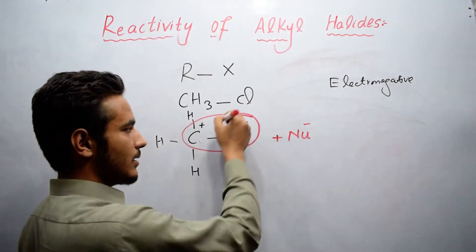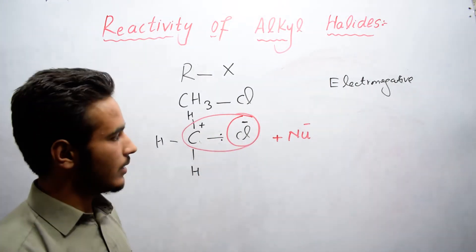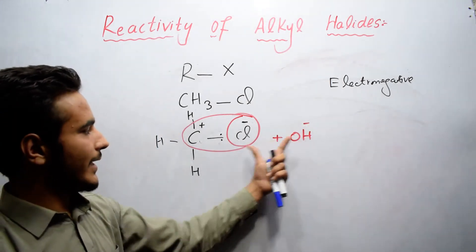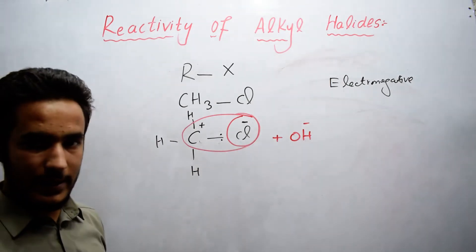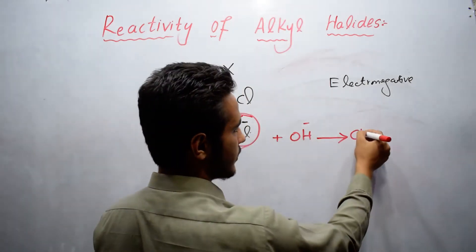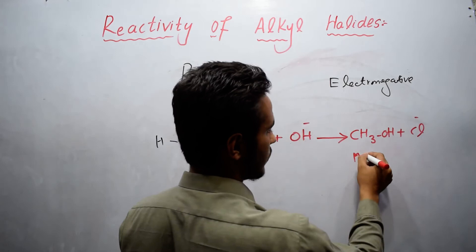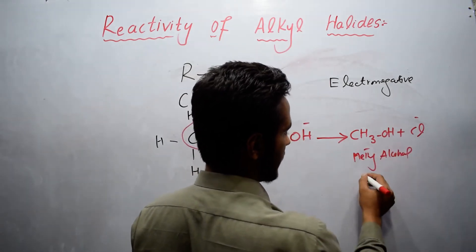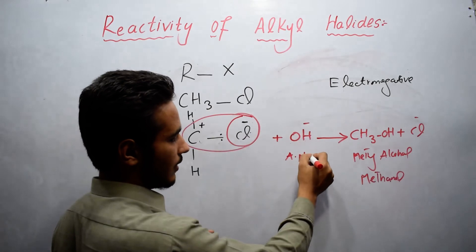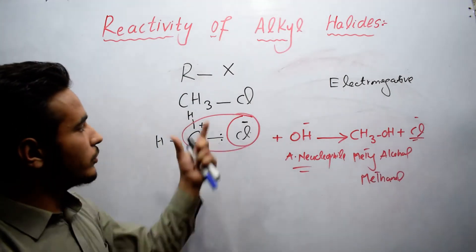A nucleophile is basically a negative species that loves positive charge. Chlorine is also a nucleophile because it carries a negative charge. When a stronger nucleophile like OH⁻ attacks methyl chloride, it replaces the chlorine. So CH₃Cl + OH⁻ gives CH₃OH plus Cl⁻, which is methyl alcohol, also known as methanol. Here OH is the attacking nucleophile and Cl⁻ is the leaving nucleophile.